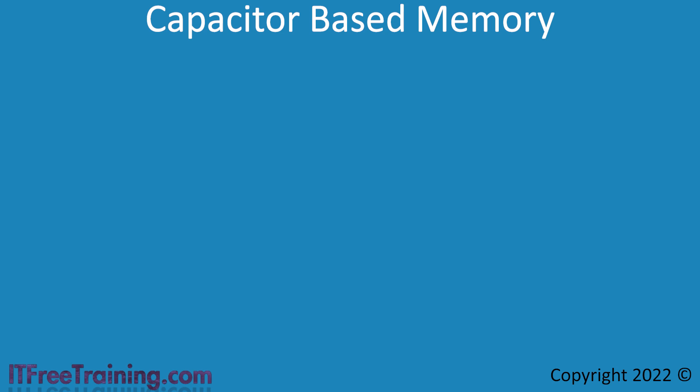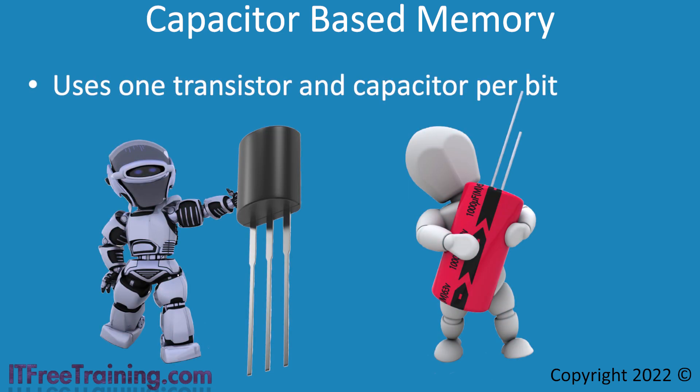In order to reduce the number of transistors required for computer memory, a new type of memory was developed. This utilizes a transistor and a capacitor. A capacitor is an electronic component which can hold a charge. This is similar to a battery; however, a battery holds a charge for a long time while a capacitor holds a charge for only a short period. In the case of memory, if the capacitor is full it represents a 1 bit, and if the capacitor is empty it is a 0 bit. A 1 or a 0 bit can be stored by either filling the capacitor with a charge or emptying it.